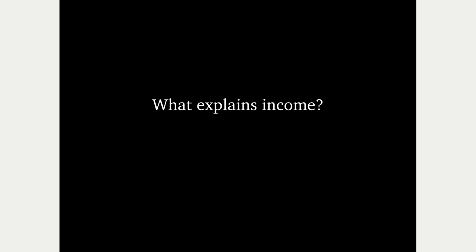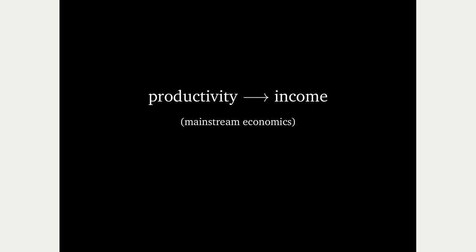Some people earn more than others — it's a fact of life, and the question is why. Why does a CEO usually earn far more than a janitor? The answer that economists have accepted is that productivity explains income. I'm going to be using this arrow notation throughout my talk to mean causation — productivity causes income. That's a hypothesis that runs throughout mainstream economics, and I'm going to be talking about the flaws in this hypothesis.